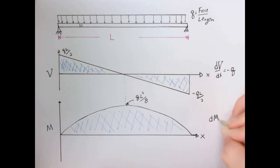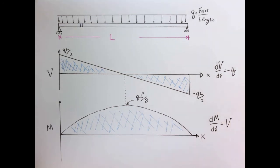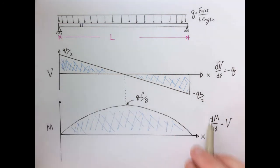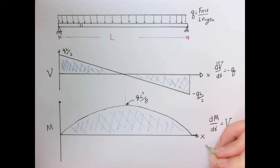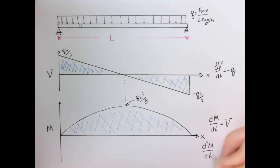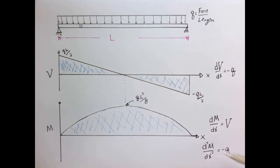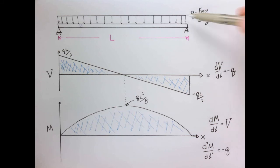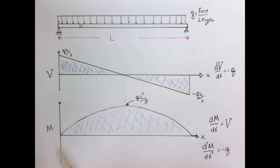The other result, dM/dx = V, is also consistent. Since the shear is a line, the moment — whose derivative is a line — must be a parabola. Substituting both expressions gives d²M/dx² = -Q. The second derivative of a function is its curvature, so constant curvature means a parabolic shape. The negative sign means the curvature is negative, so the function is concave downward — exactly what we found.